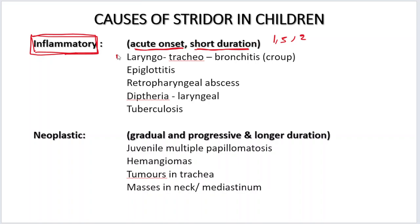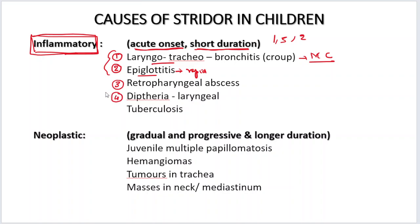In the inflammatory category, the causes include the laryngotracheobronchitis group and acute epiglottitis — these are the most common. Epiglottitis has a very rapid progression, and laryngotracheobronchitis is the most common cause of infectious airway obstruction in children. Then we have retropharyngeal abscess, mostly because of suppuration of a retropharyngeal lymph node. Diphtheria is mostly localized to the tonsils, but sometimes it can go to the larynx causing Strider. Also tuberculosis of the larynx.